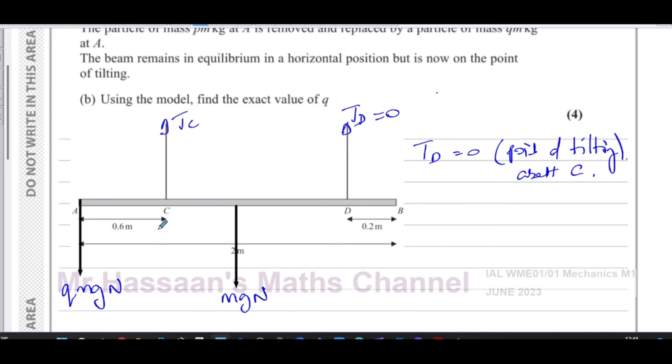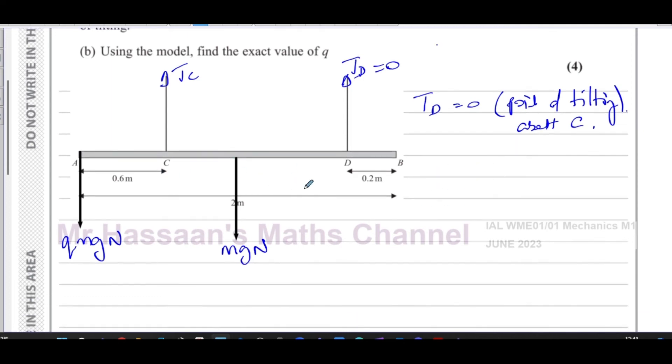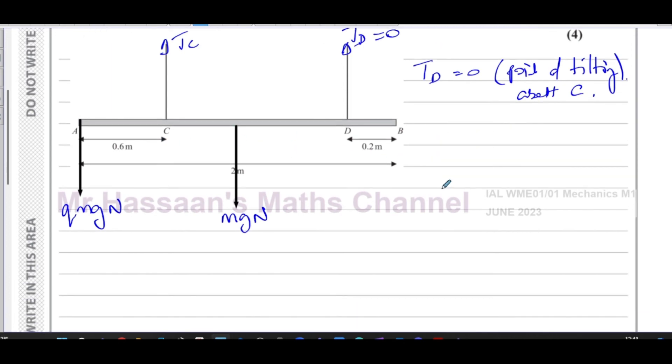What we can do here is we can take moments and then that will give us our answer. So we know that the tension in C, we don't know what it is. It's going to be basically equal to the sum of these two. But what we can do to eliminate that is we can take moments about C.